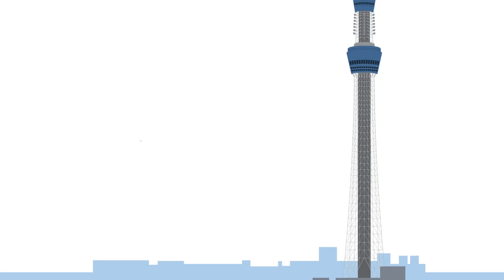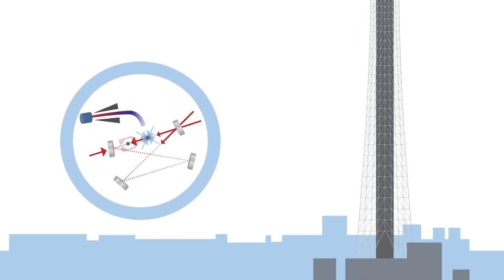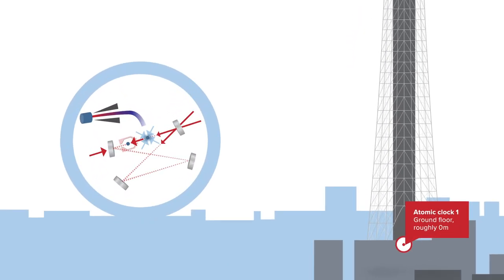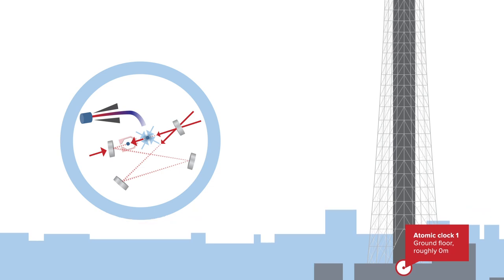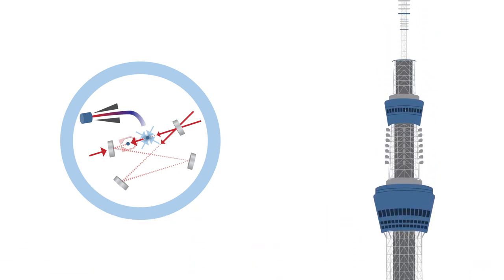And this time, they've done it using a pair of ultra-precise clocks spaced 450 meters apart, one on the ground and the other in the observatory floor of Tokyo Skytree, one of the tallest towers in the world.